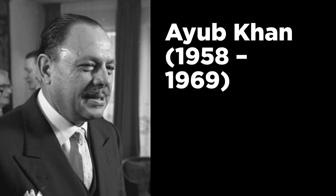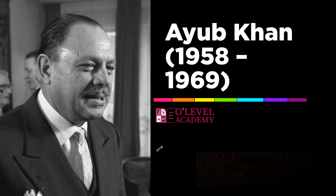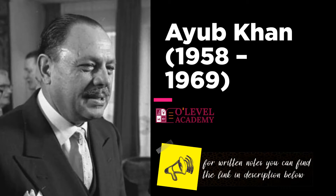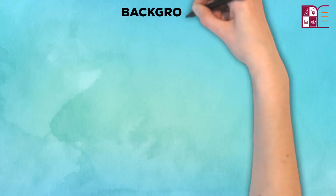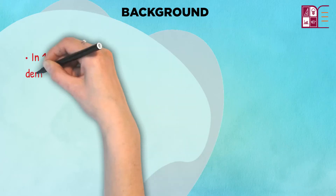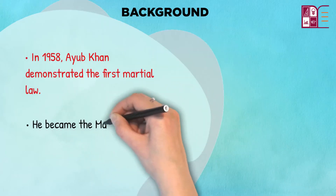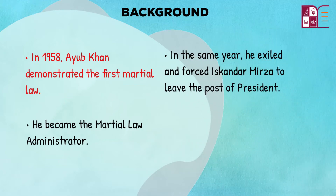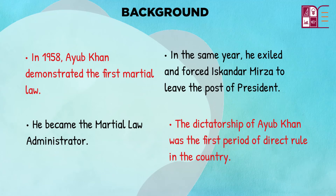Ayub Khan 1958 to 1969. Background: In 1958, with the support of Iskandar Mirza, Ayub Khan demonstrated the first martial law and became the martial law administrator. In the same year, he exiled and forced Iskandar Mirza to leave the post of president. The dictatorship of Ayub Khan was the first period of direct rule in the country.